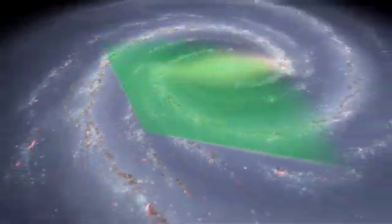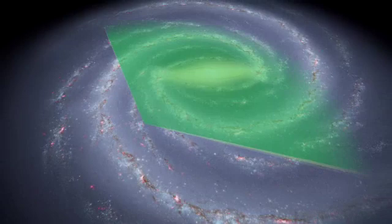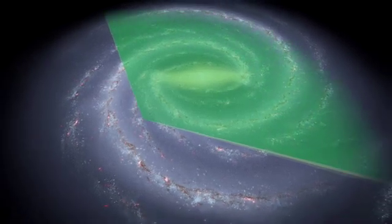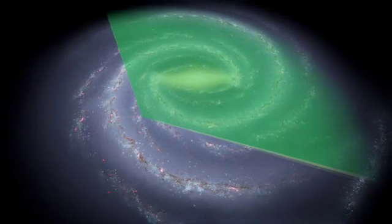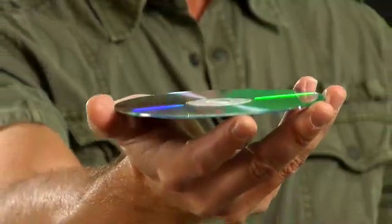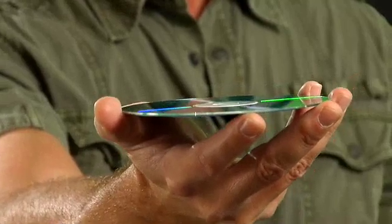Our sun sits a ways out from the galactic center, so a 130-degree arc takes in most of its area. Though our Milky Way is actually very thin compared to its diameter, a lot like a CD, so even a 2-degree-wide scan is going to include most of its disk.